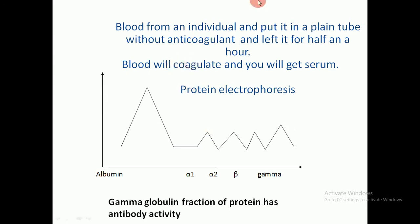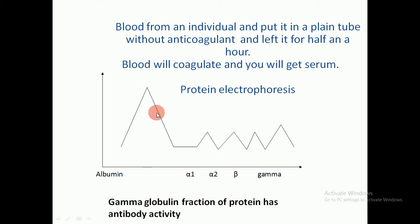If you take blood from any individual, put it in a plain tube without anticoagulant, and leave it for half an hour, the blood will coagulate and you will get the serum. When we take this serum and do electrophoresis, we get spikes: first albumin, then alpha-1, alpha-2, beta, and gamma. The gamma globulin fraction of the protein has antibody activity, so antibodies are found in the gamma region.